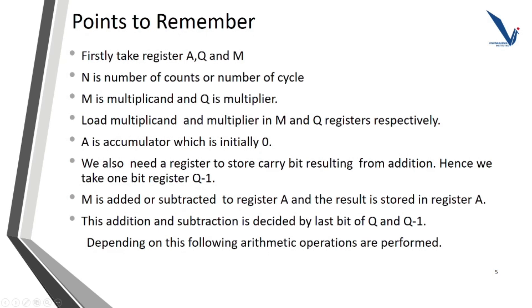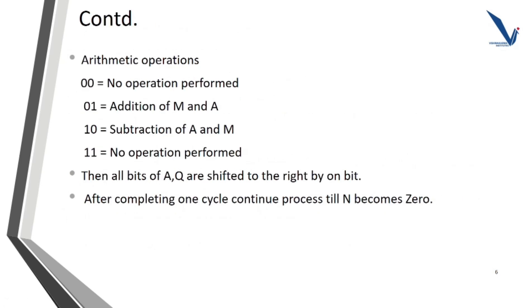M is added or subtracted from register A, and the result is stored in register A. This addition or subtraction is decided by the last bit of Q and Q-1. Depending on this, the following arithmetic operations are performed: if the combination is 0,0 — no operation; if 0,1 — addition of M and A; if 1,0 — subtraction of A and M; if 1,1 — no operation.